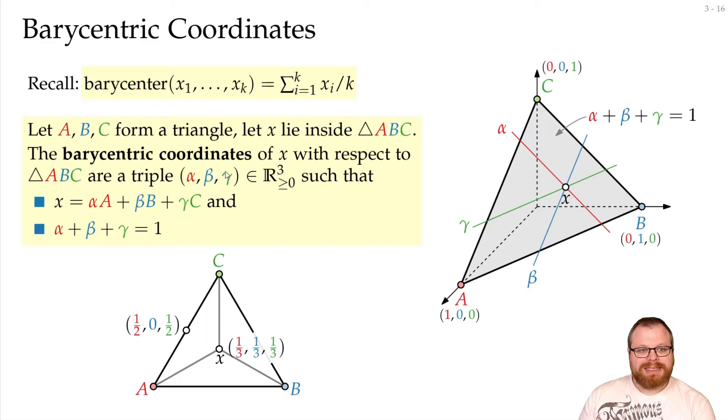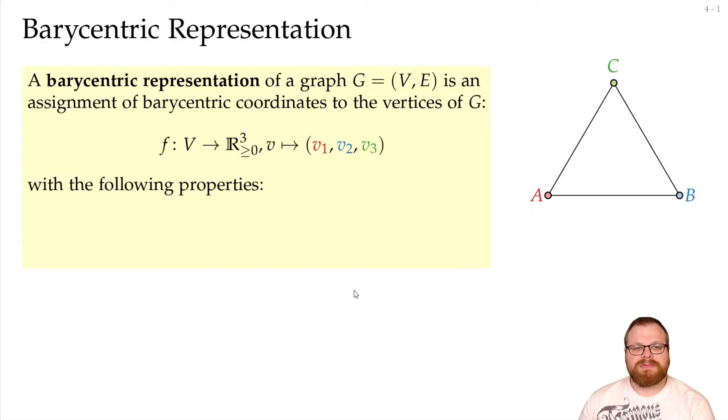And based on barycentric coordinates, we can define a so-called barycentric representation. In that, we assign to every vertex a barycentric coordinate. So we have three numbers, v1, v2, v3, that sum up to 1. But since that can still be anything inside this triangle, we want something stronger.